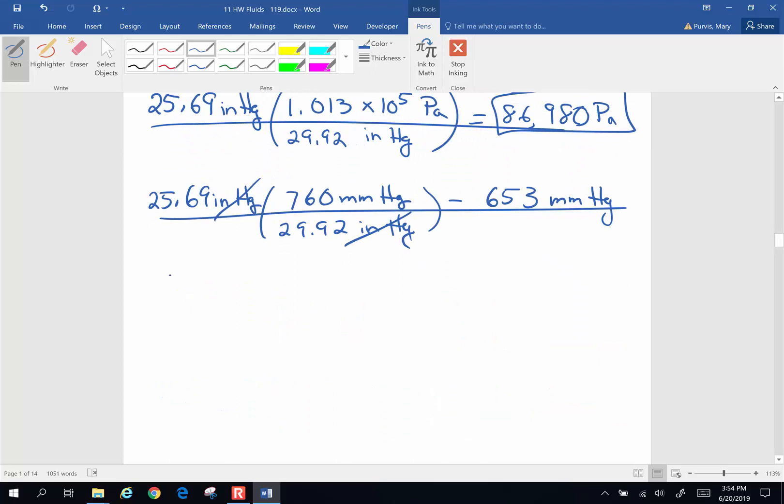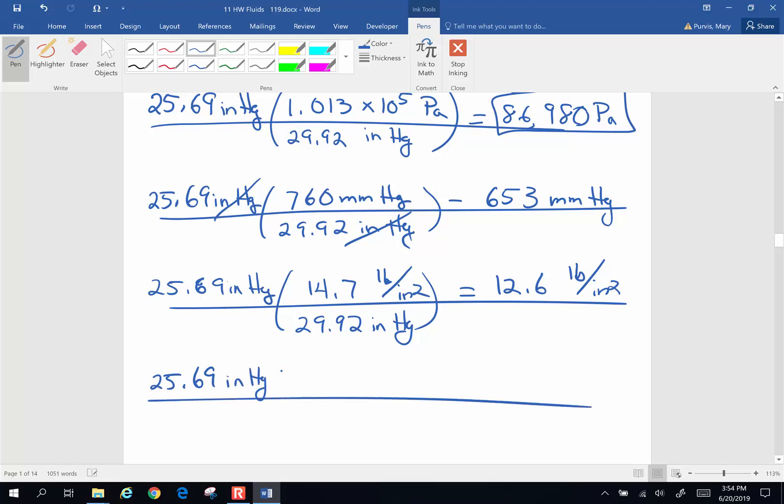The next conversion is 25.69 inches of Mercury, and we're going to convert this into pounds per square inch. So 29.92 inches of Mercury is 14.7 pounds per square inch. And when I do that one, I end up with 12.6 pounds per square inch. And last but not least, atmospheres. 29.92 inches of Mercury are 1 atmosphere. And that's going to end up being 0.859 atmospheres.